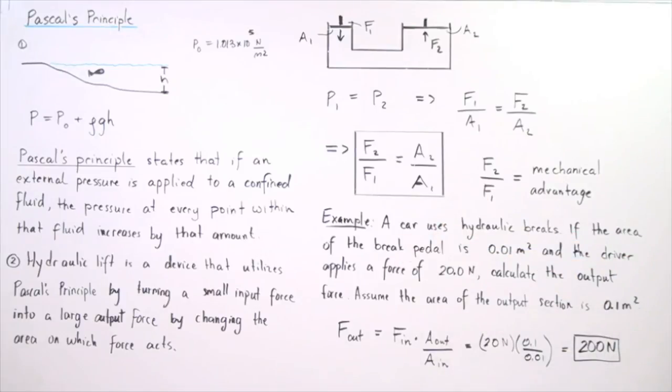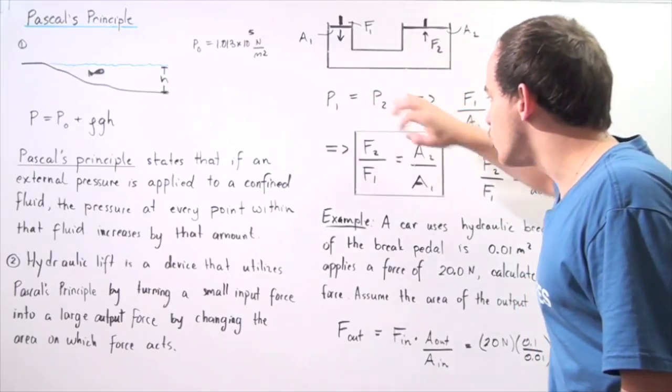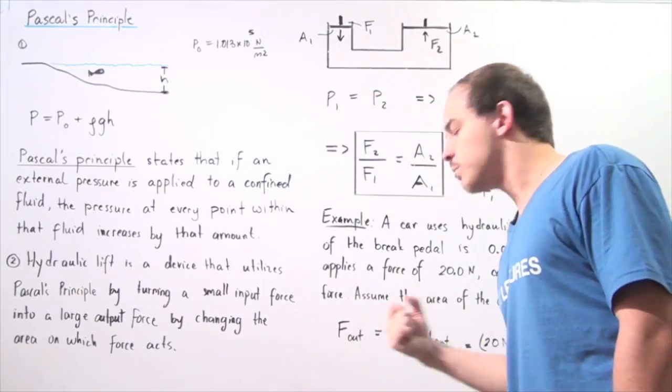Let's look at the following example. Suppose a car uses hydraulic brakes. If the area of the brake pedal is 0.01 m squared and the driver applies a force of 20 newtons onto that brake pedal, calculate the output force assuming the area of the output section is 0.1 m squared. We take this equation and want to calculate F2, the output force.